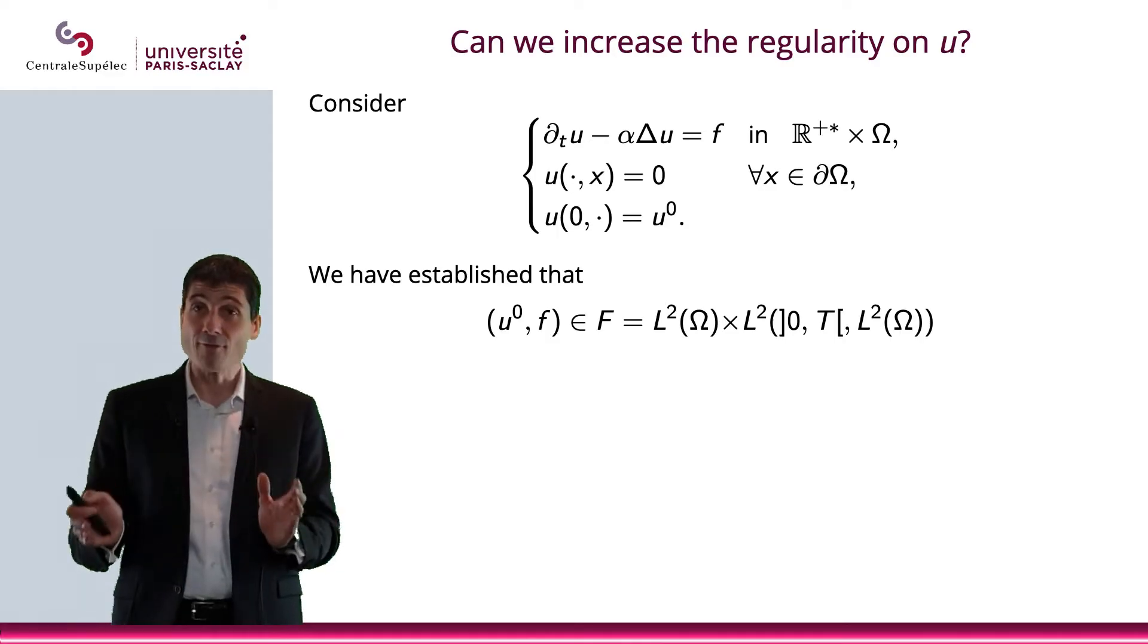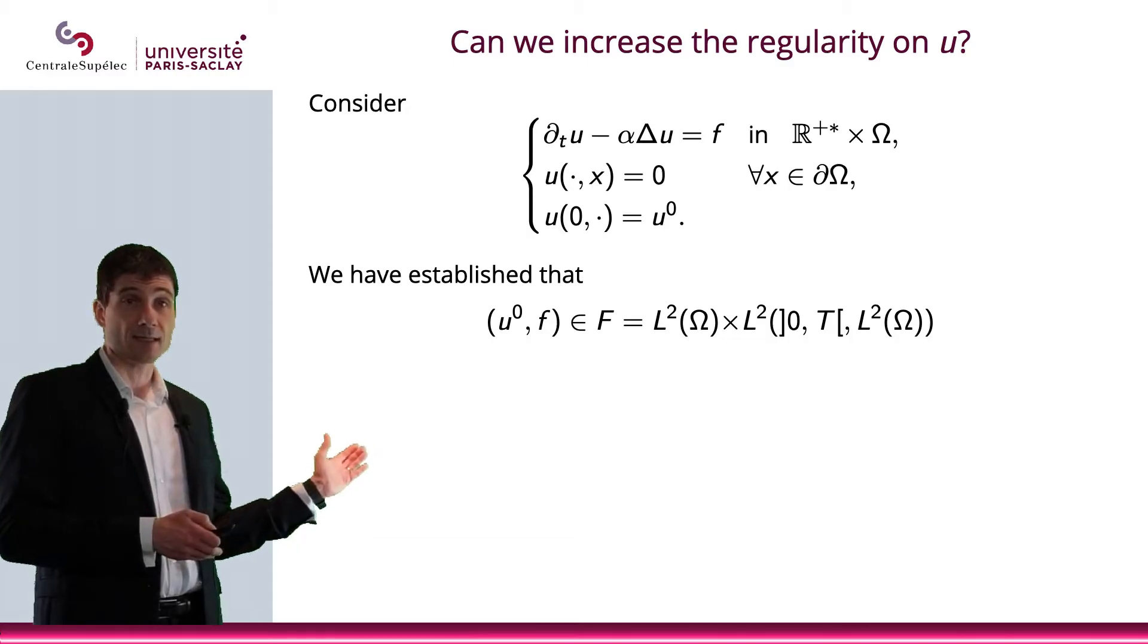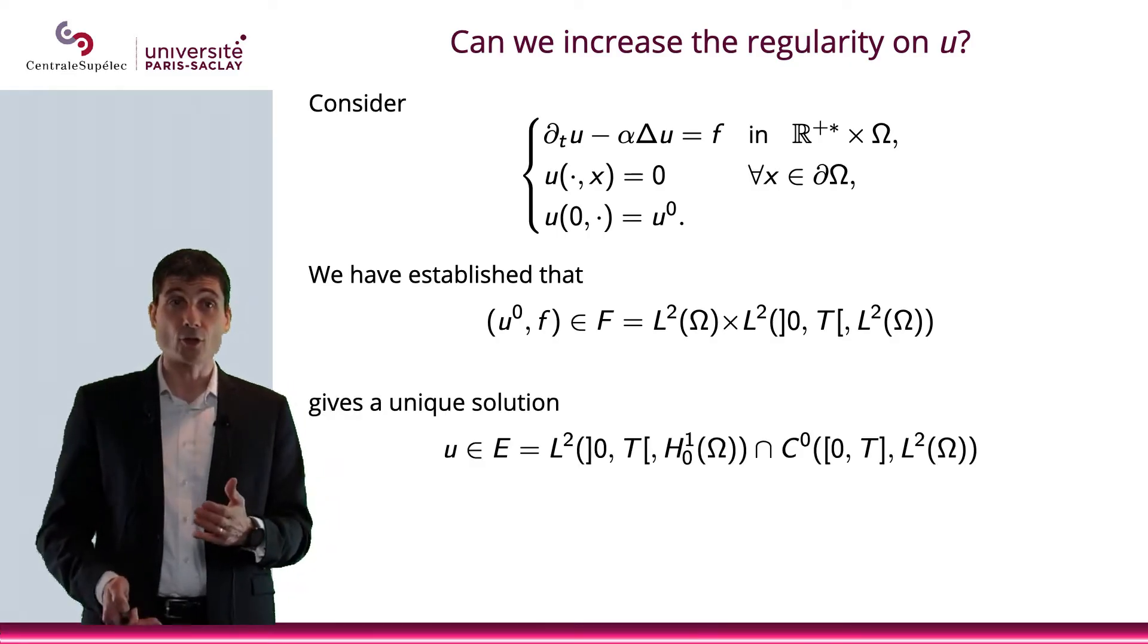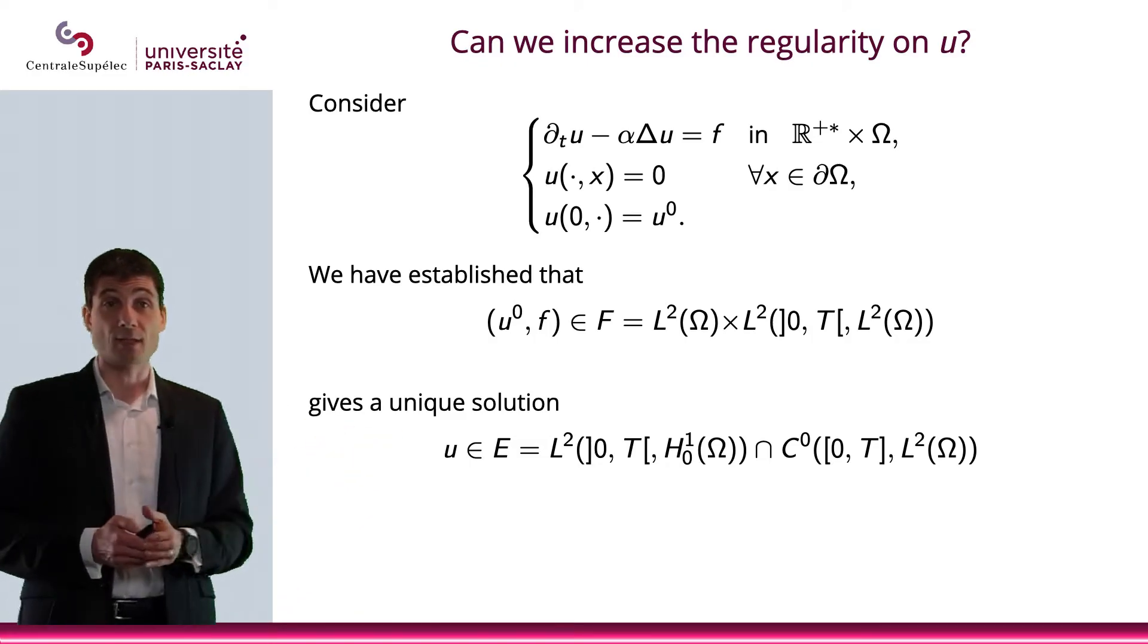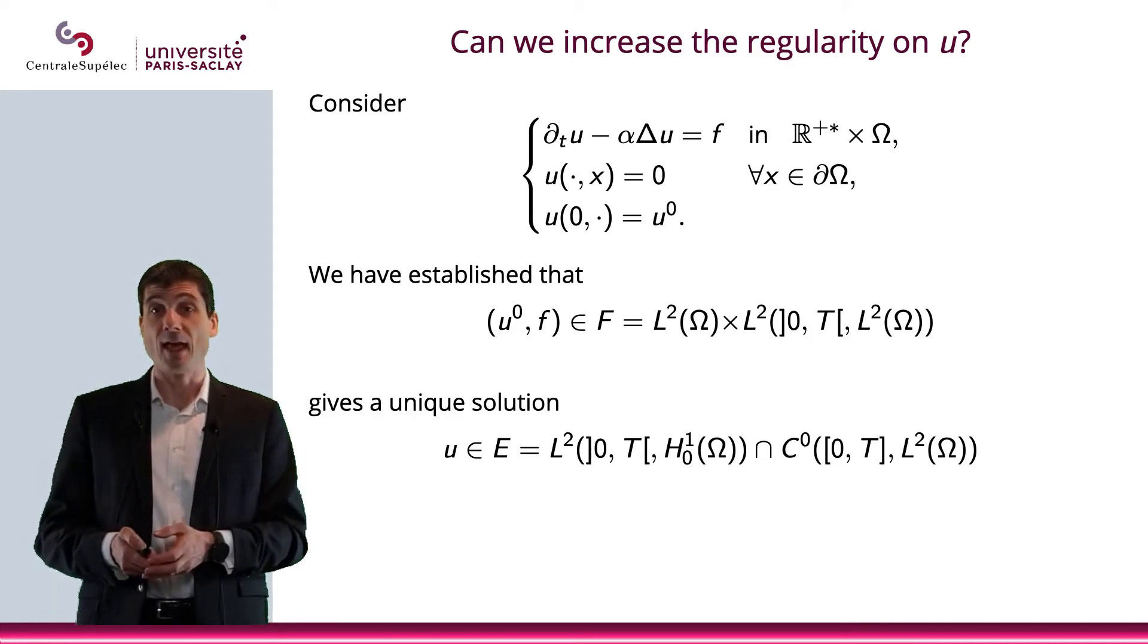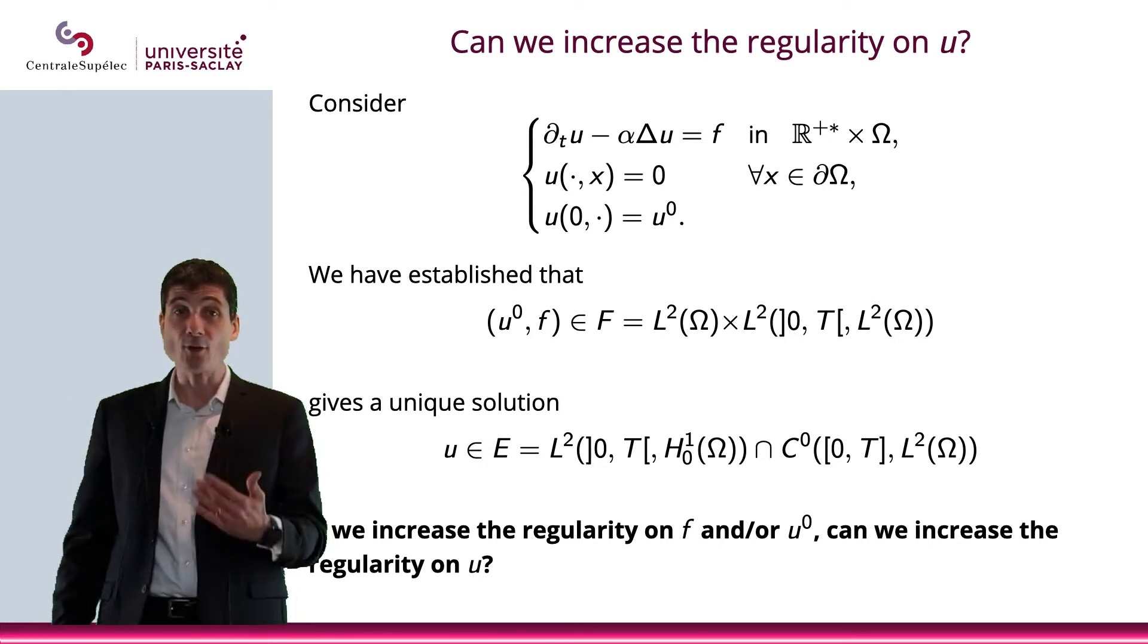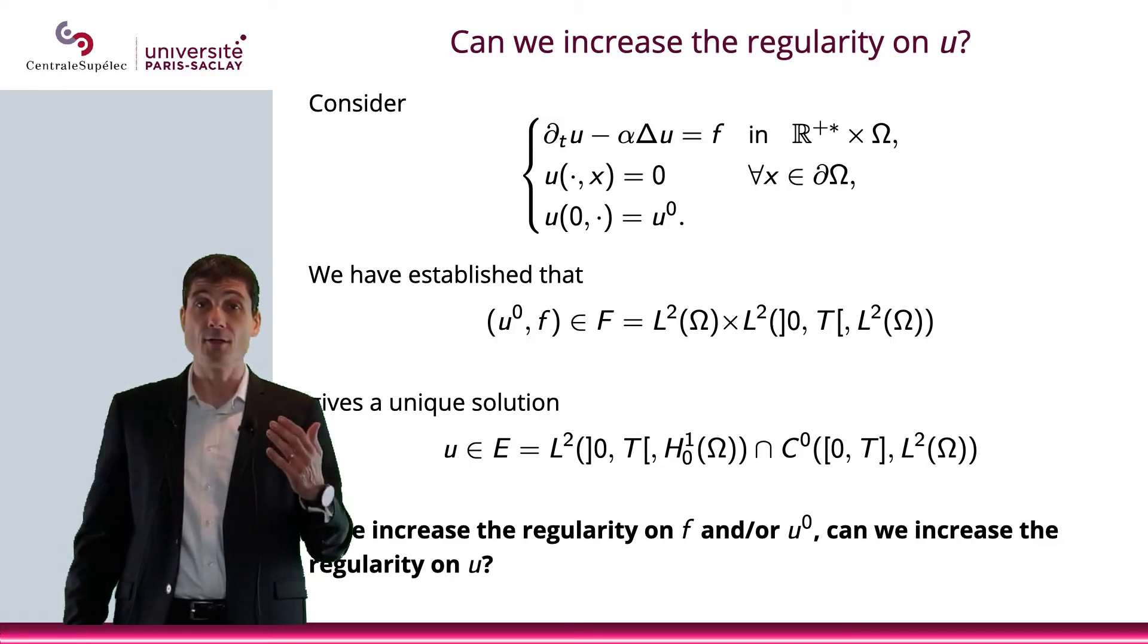Well, we have already established that if the initial condition u0 is in L2, and if the right-hand side f is in L2(0,T; L2(Ω)), then the solution u is unique in this space, which is L2(0,T; H1_0) intersected with C0(0,T; L2). Now, if we increase the regularity of f and or u0, can we increase the regularity on u?